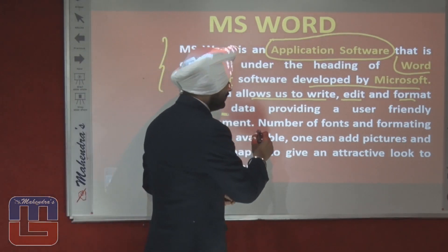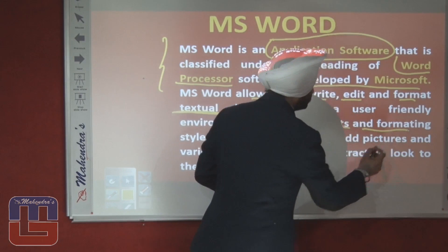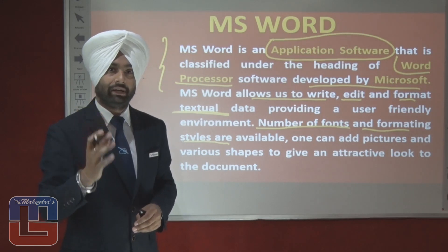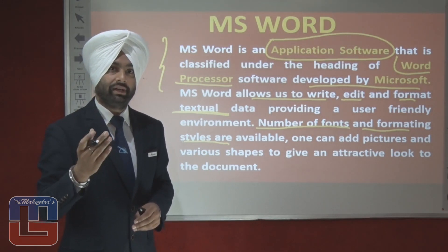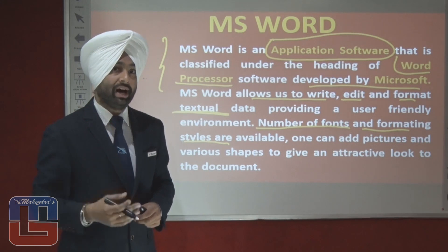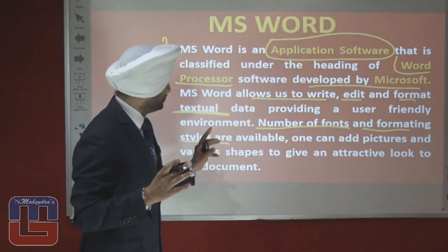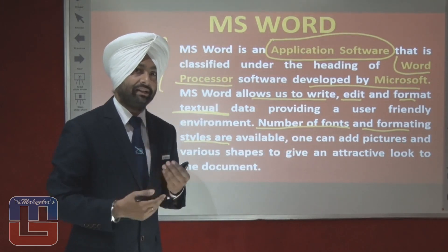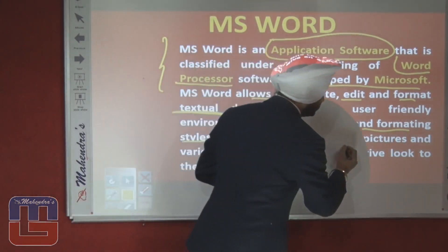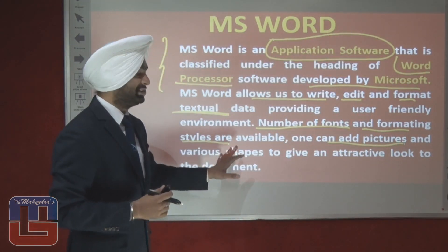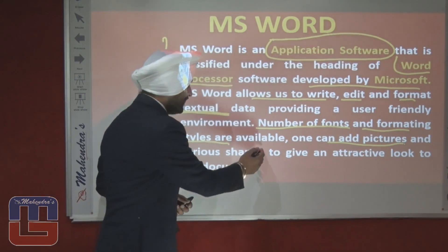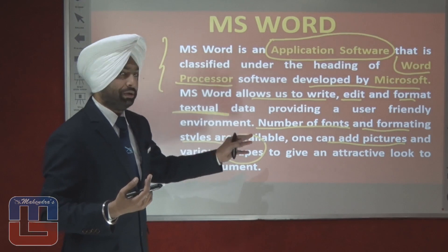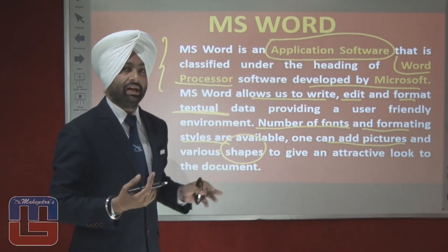A number of fonts and formatting styles are available in MS Word, which help in making our document more and more attractive. One can also add pictures and various shapes — triangles, squares, circles, etc. — all to make the document look more attractive.